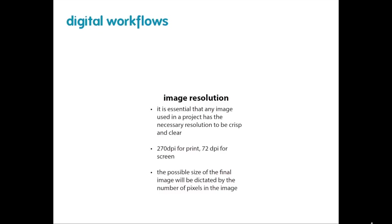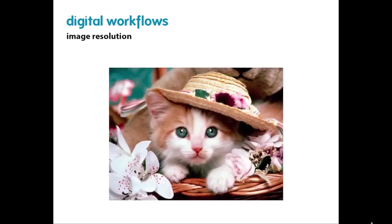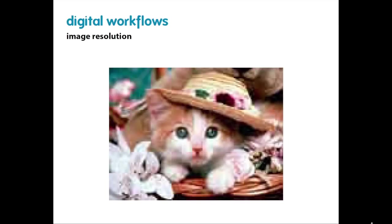Image resolution is incredibly essential — any image you use must have the necessary resolution to be crisp and clear. For a print project you want 270 dpi (dots per inch, sometimes called ppi), or 72 dpi for screen. The final size of an image in print media is dictated by the number of pixels. A crisp kitten photo looks great at full resolution, but as it gets pixelated it becomes muddied, hard to see, and looks really amateurish. We want to avoid that at all costs.